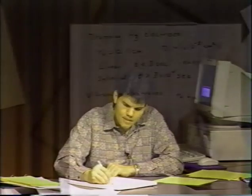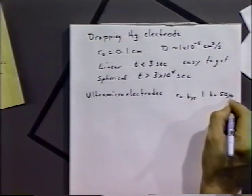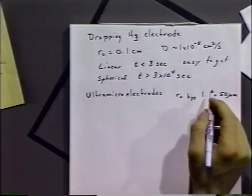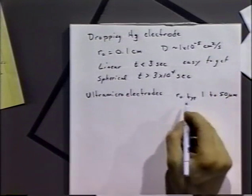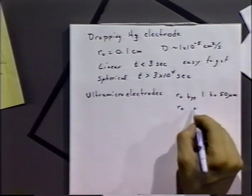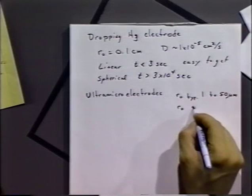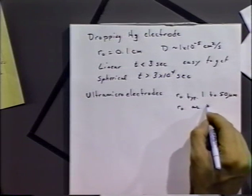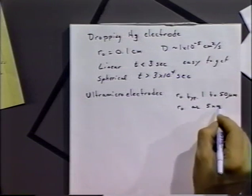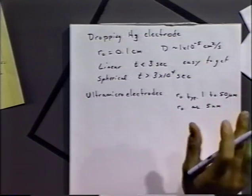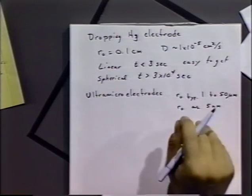People are starting to call ultramicroelectrodes microelectrodes only. What we talked about with ultramicroelectrodes: the R0 typically could be from 1 to 50 micrometers, although R0 as small as 5 nanometers have been made for ultramicroelectrodes. So they can be very tiny electrodes.